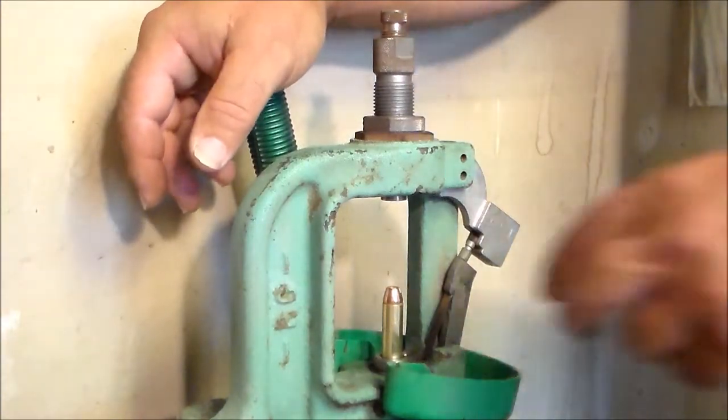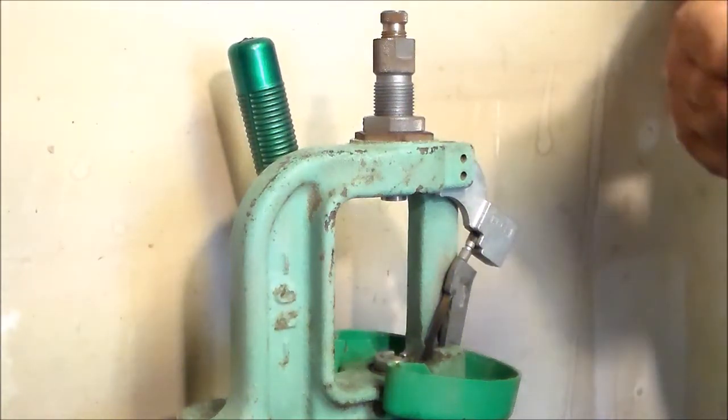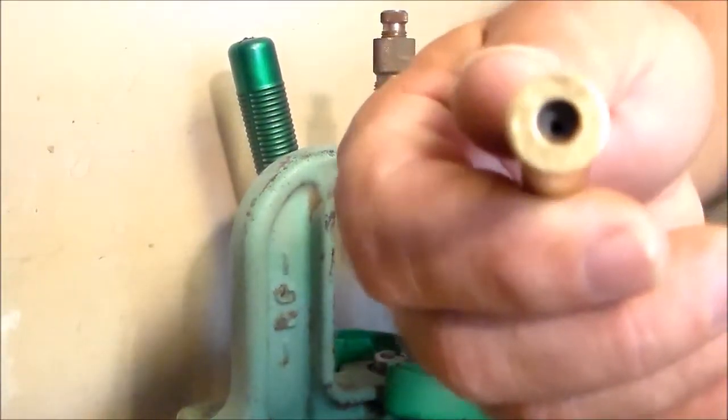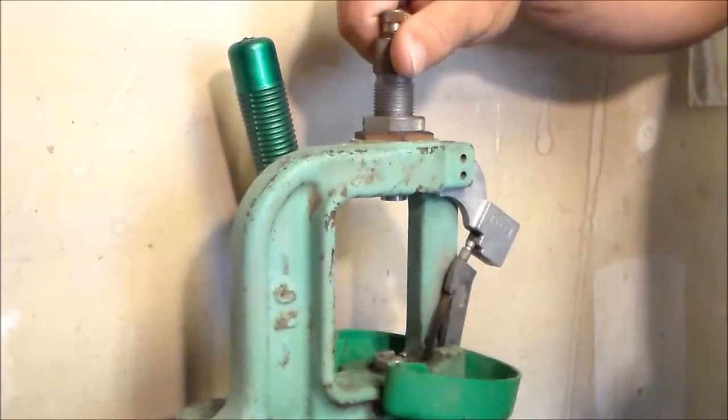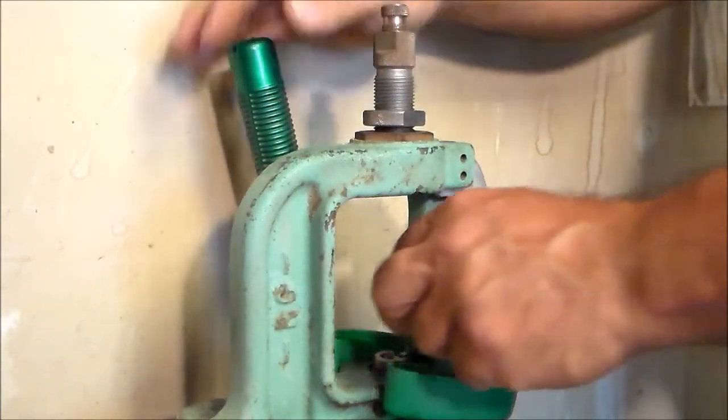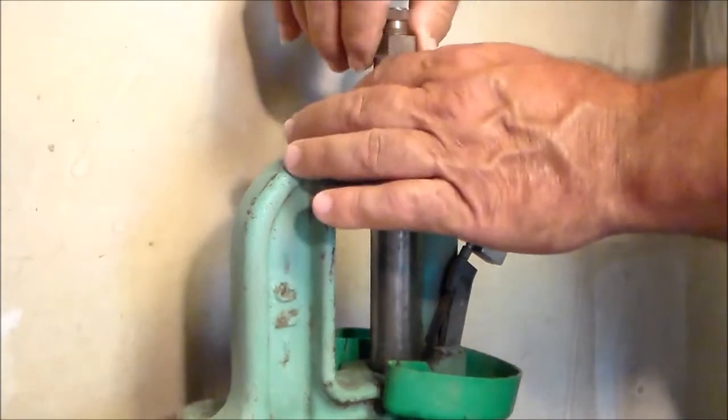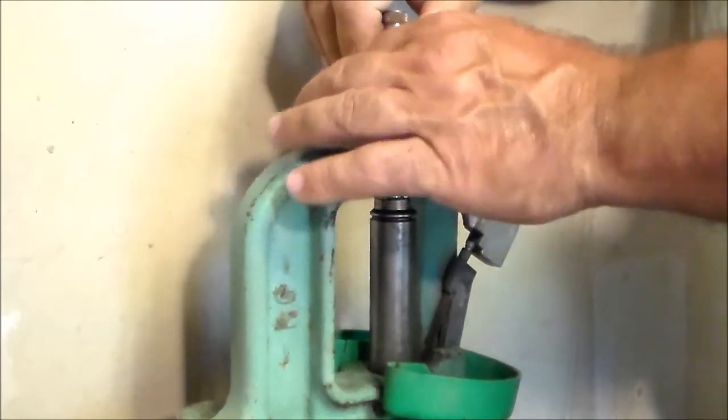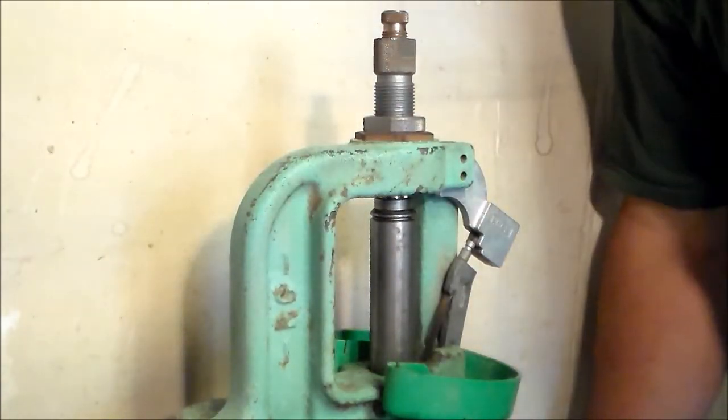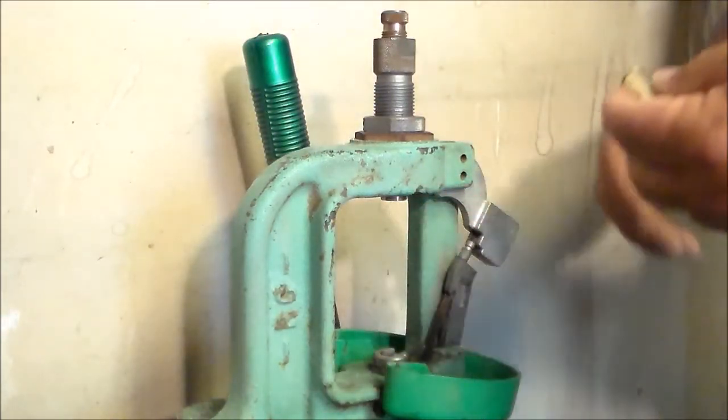And now we're ready for production reloading. This die is set up to do every round. You can keep your spent case and bullet as a model so that every time when you're going to load another batch of ammo, just run this die until you hit the top of the case first, and then run your seating stem down until you make contact with the bullet, and you have a very repeatable overall length of your bullet.